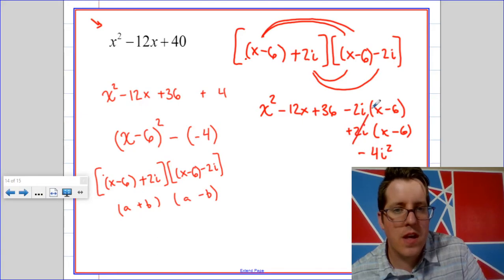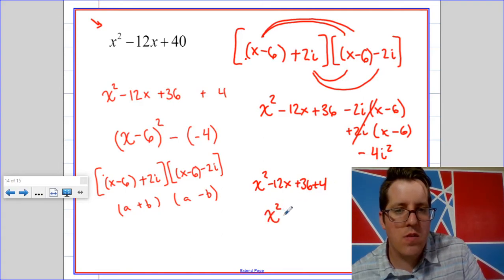So these cancel and that's going to give me x squared minus 12x plus 36 plus 4, which is x squared minus 12x plus 40. Hey, that's what I started with.